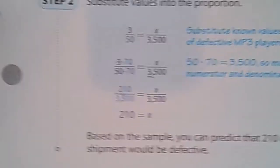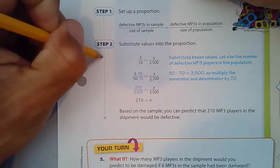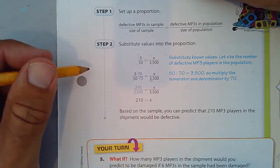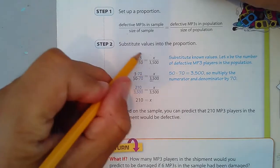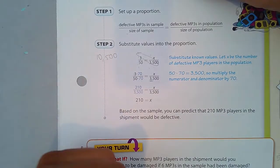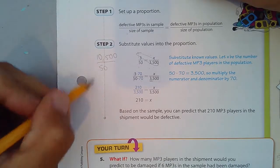We could also do this. We could cross-multiply 3 times 3,500. That's 7,000, that's 10,500. So, if I multiply these two, 10,500, and I divide it by 50, I would get 210.